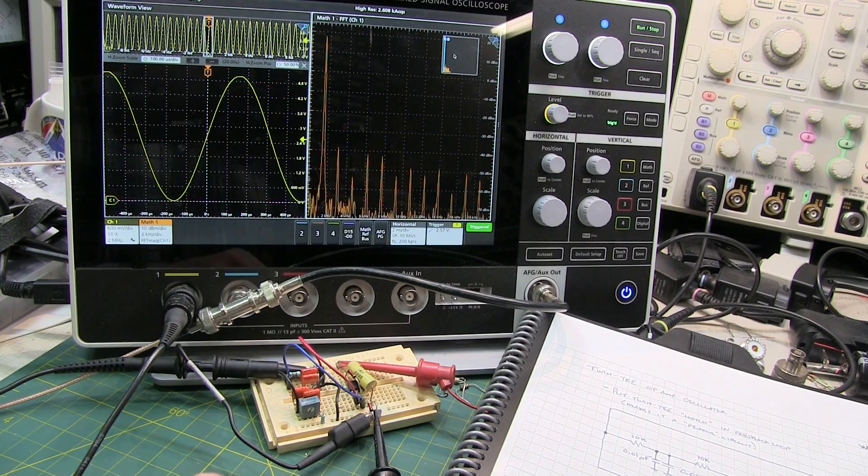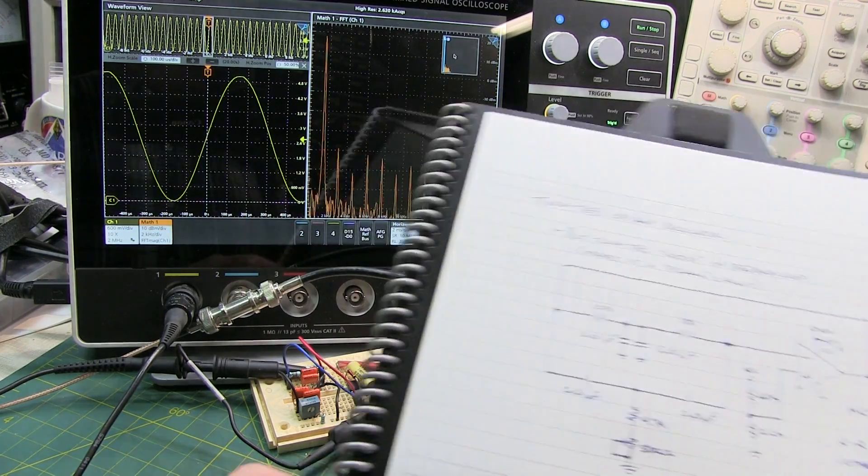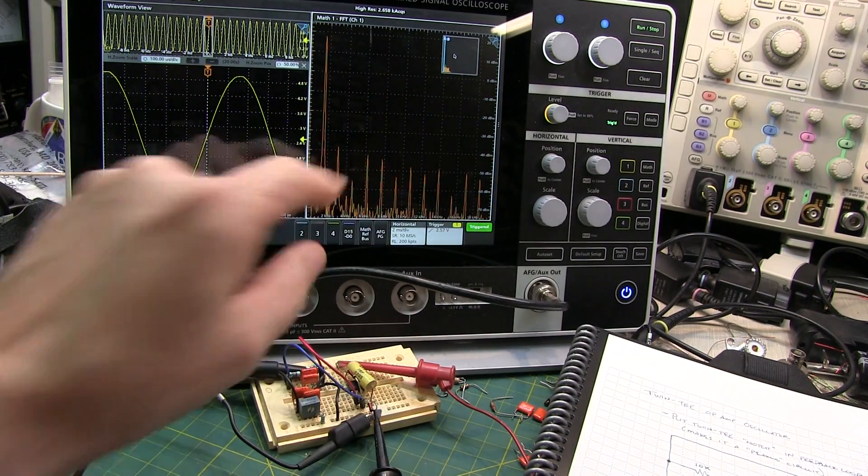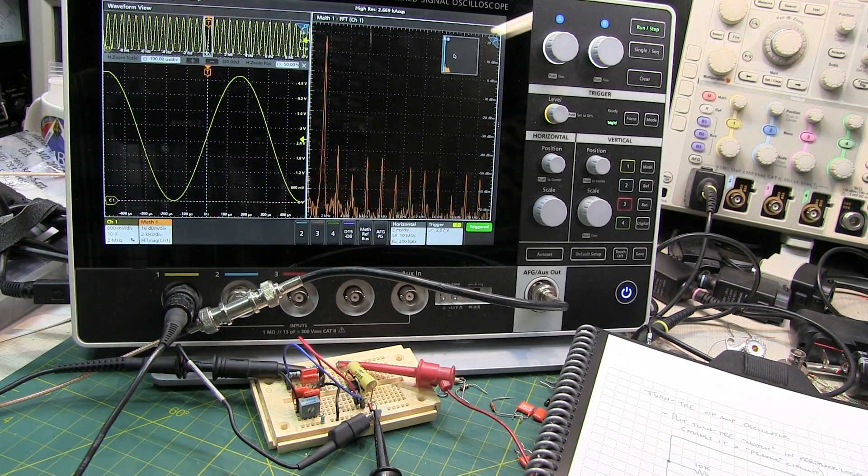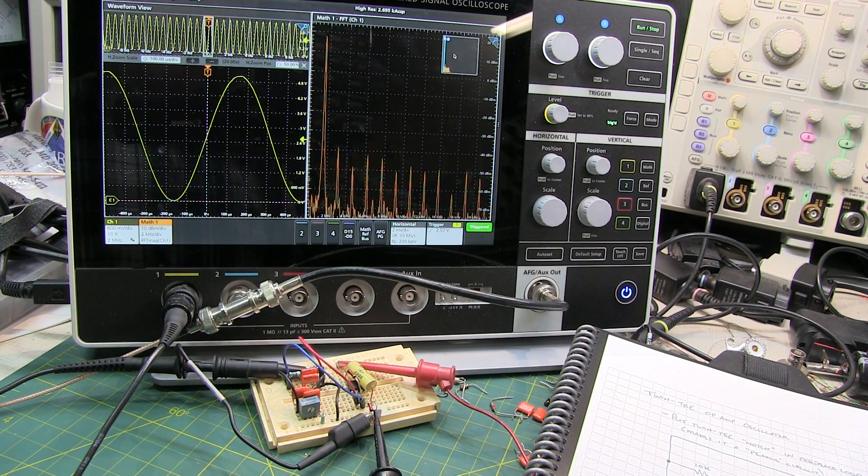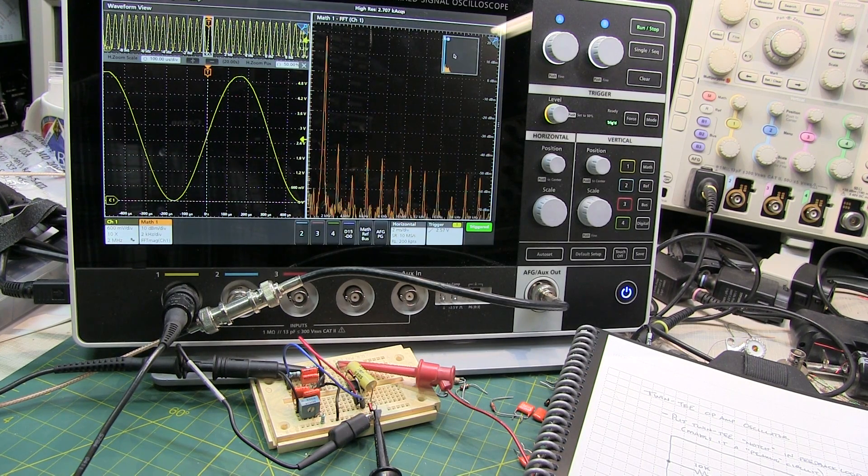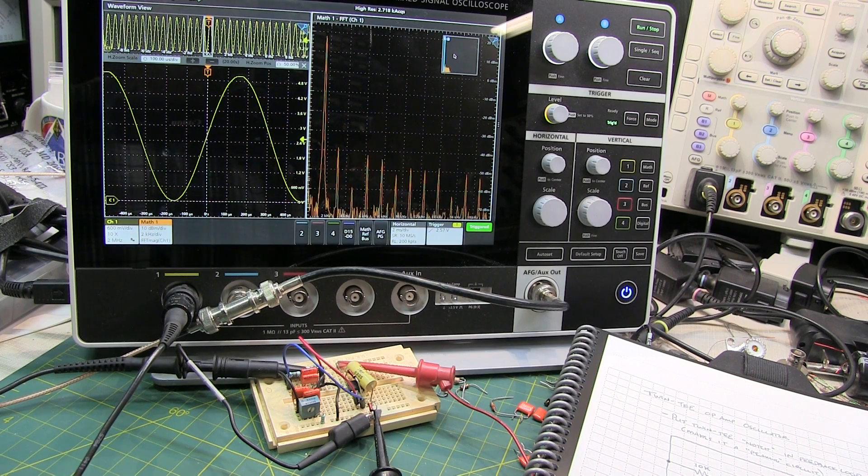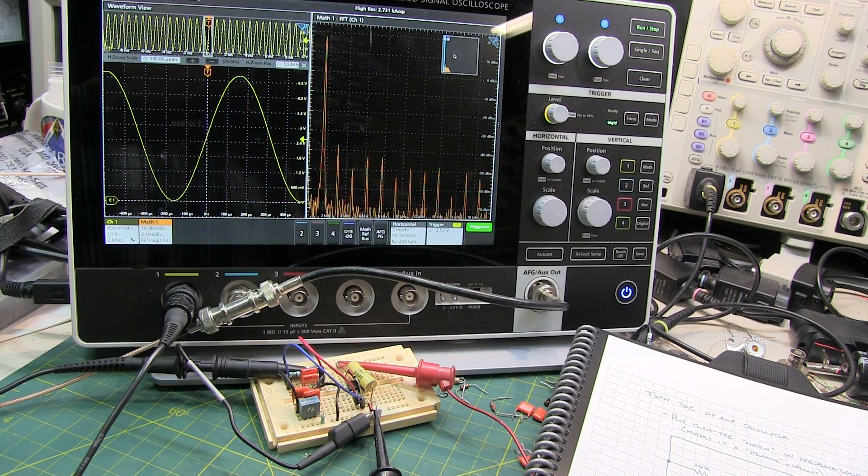So that was just a short follow-up to take a look at the distortion both through FFT on the scope as well as with the numeric reading on the THD multimeter. Thanks again for all your interaction on the previous video and asking to see this. I hope this satisfies your curiosity, and we'll see you next time.